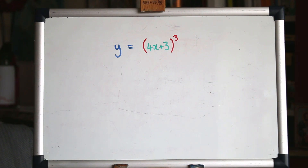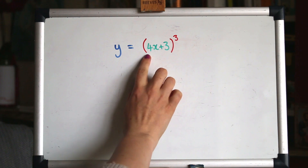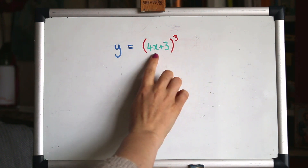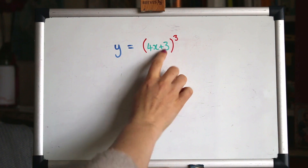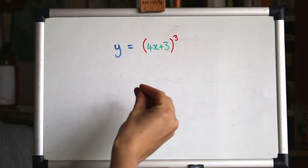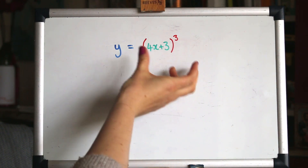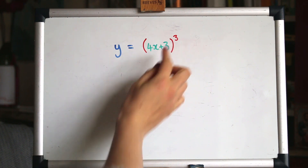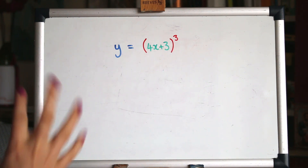I've written this with green and red so you can see there's a function of a function going on here. The green is one function — that's the inner function, 4x plus 3. And the outer function is that we are taking something and cubing it. So there's two different functions going on there. And because one is being applied to the other, it's quite a complex expression, so that's when we need the chain rule.